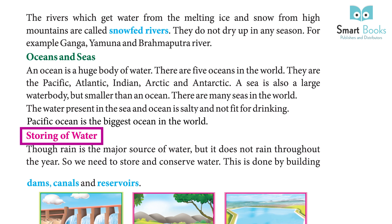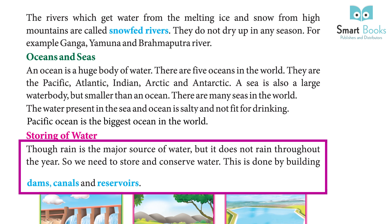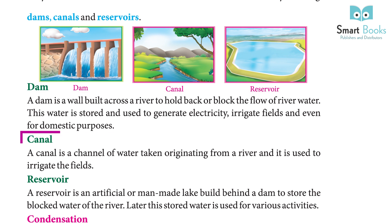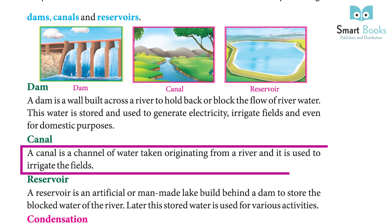Storing of water: Though rain is the major source of water, it does not rain throughout the year, so we need to store and conserve water. This is done by building dams, canals, and reservoirs. A dam is a wall built across a river to hold back or block the flow of river water. This stored water is used to generate electricity, irrigate fields, and for domestic purposes.